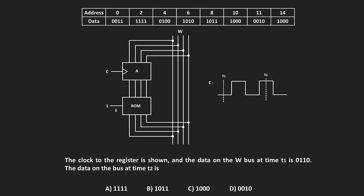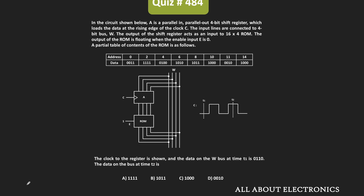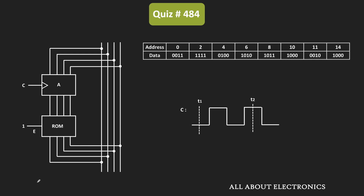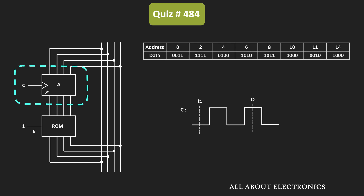In this question, we have been given this circuit and we have been asked to find the data on the bus at time t2. Let us understand what has been given to us. As you can see, A represents the parallel-in parallel-out shift register. The output of the data bus is connected as an input to the shift register, and the output of the shift register is connected to this ROM.